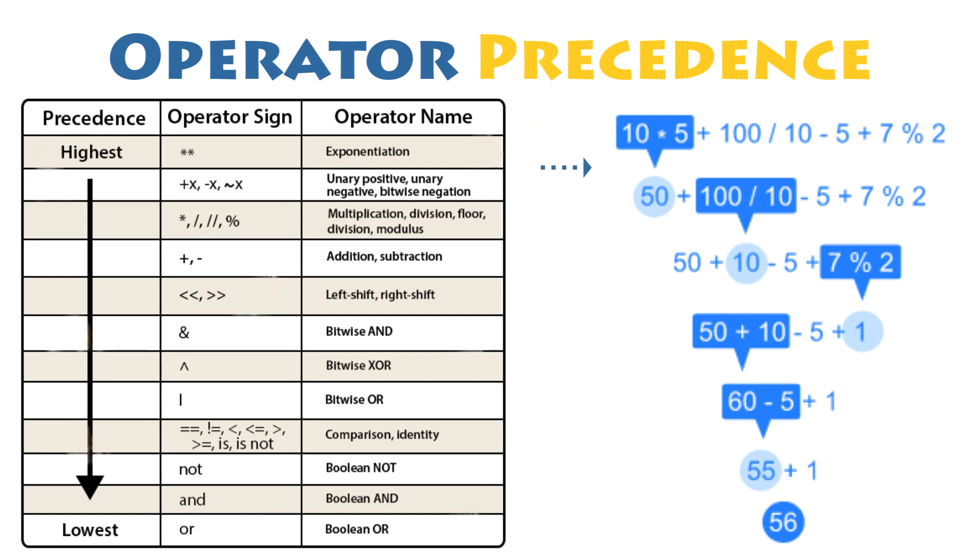Once those results are obtained, operators of the next highest precedence are performed. So it continues until the expression is fully evaluated. And any operators of equal precedence are performed in left to right order. Here is the order of precedence of the Python operators you have seen so far from lowest to highest.